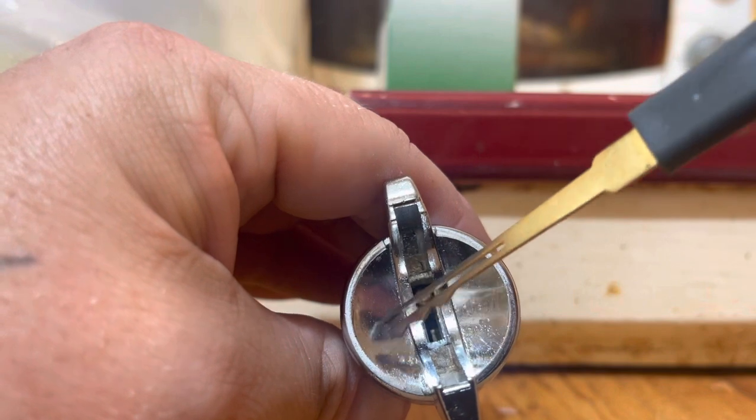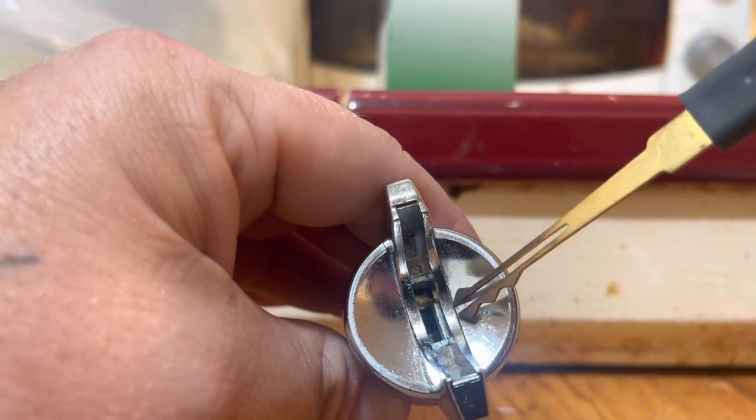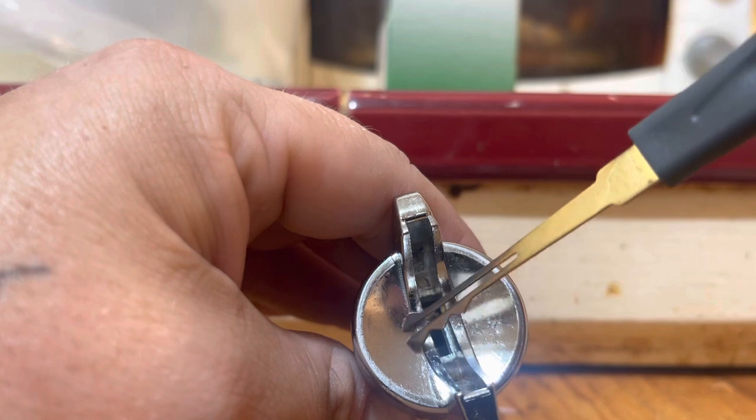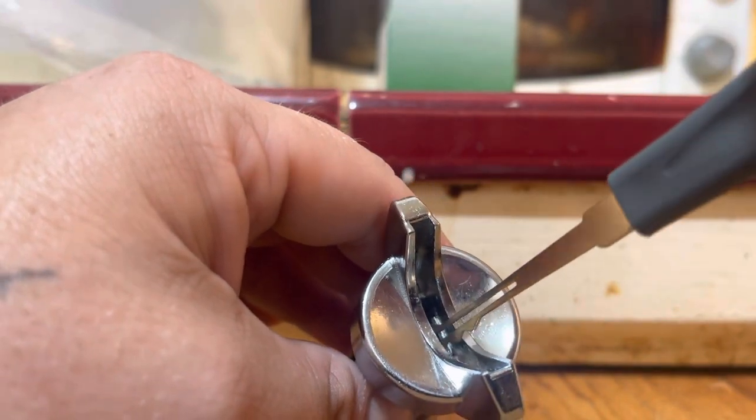If the keyhole is offset to, I believe, maybe the right a little bit, there's gonna be a sidebar, and you will not be able to pick it over.